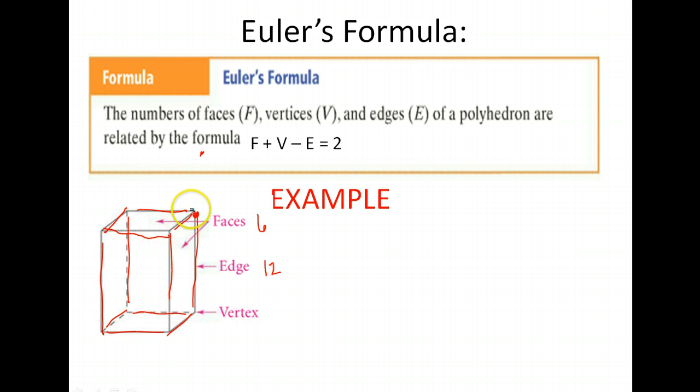And finally, how many vertices do we have? Remember, those are the lines coming together. So one, two, three, four, five, six, seven, and eight.